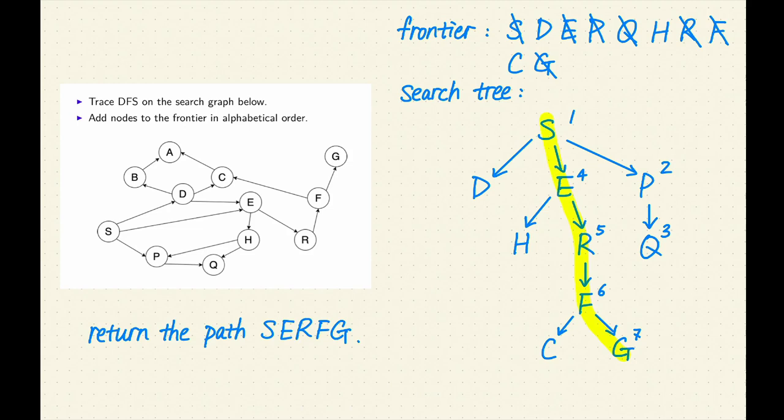Let me make some observations. First, DFS goes down one path until completion. If it doesn't find a goal on the path, it will backtrack and go down the next path. In this example, DFS reached Q and discovered that it was a dead end, so it backtracked to E and continued with the search. The order of adding nodes to the frontier is important. Because we added nodes to the frontier in alphabetical order, we ended up removing them in reverse alphabetical order. That's why DFS started by exploring the right-most path in the search tree. If we added nodes to the frontier in reverse alphabetical order, then DFS would start by exploring the left-most path in the search tree.